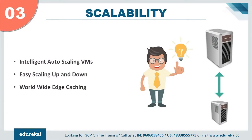Coming to the top three reasons — at number three we have scalability. You can easily scale up or down your machines depending upon your requirements, and everything is made simpler by Google. The Google VMs are auto-scalable; the auto-scaler scales up or down your instances according to the traffic it receives, saving money and making tasks simpler. This is a really cool feature as it decreases the overhead and engagement effort required for this job.